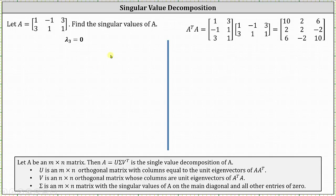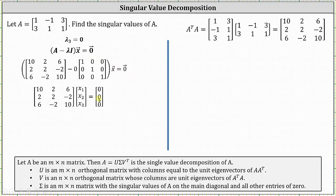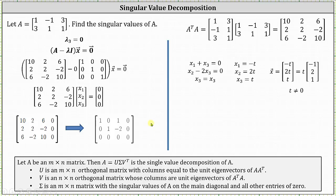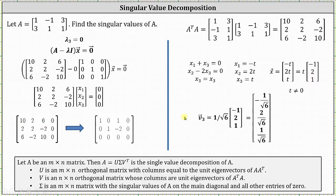Finally, for lambda sub three equals zero, we set up the augmented matrix in reduced row echelon form. Row one gives X one plus X three equals zero, row two gives X two minus two X three equals zero, and X three is a free variable. Letting X three equal T, the eigenvectors are T times the vector (−1, 2, 1). The magnitude of (−1, 2, 1) is the square root of six, so vector V sub three has components (−1/√6, 2/√6, 1/√6), forming the third column of matrix V.